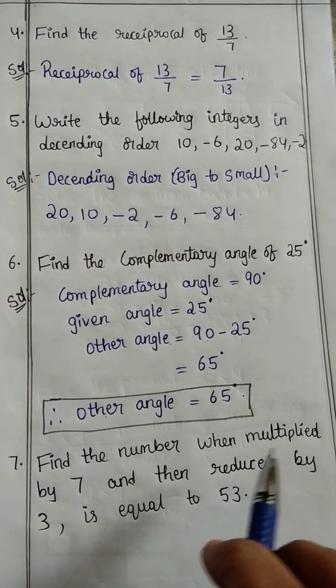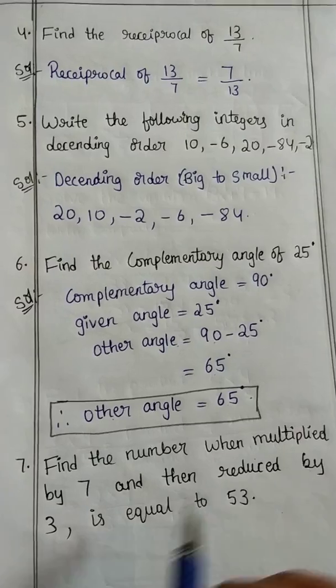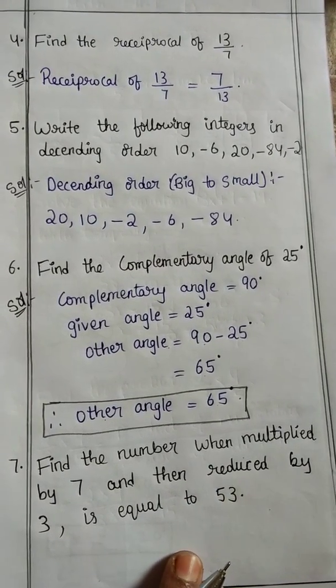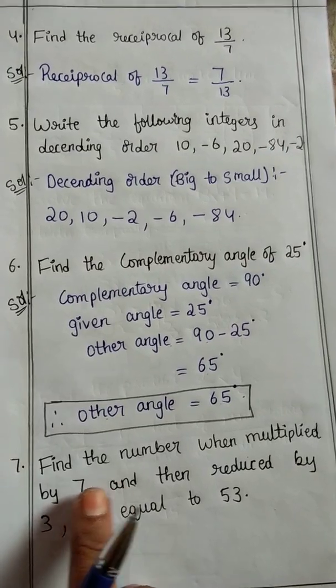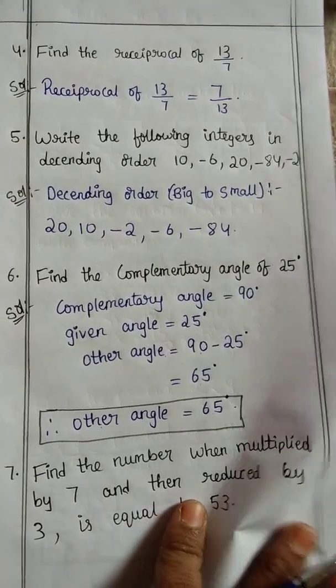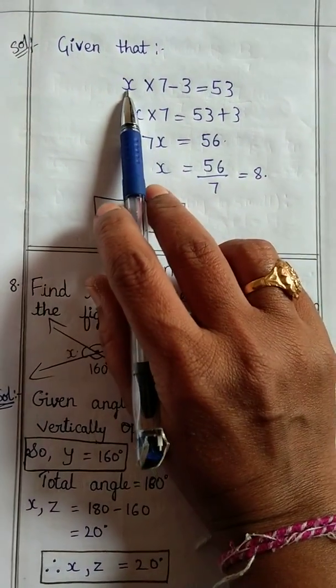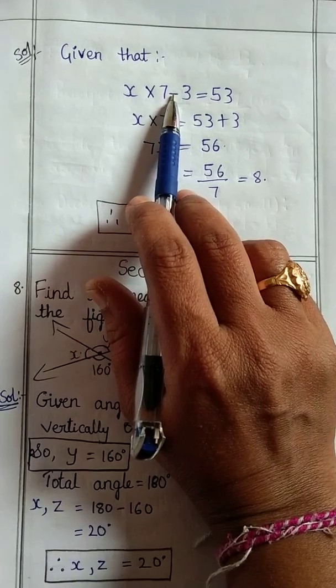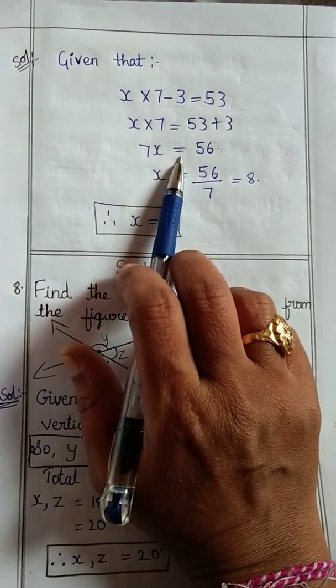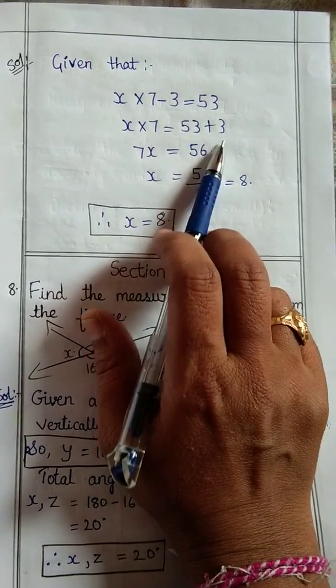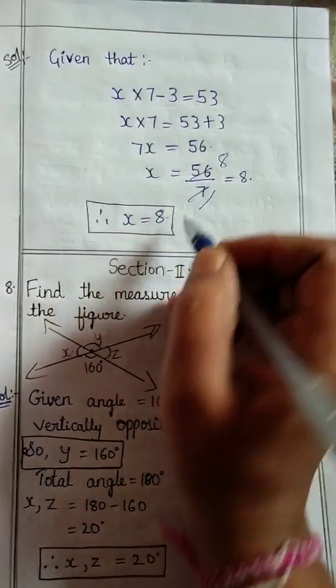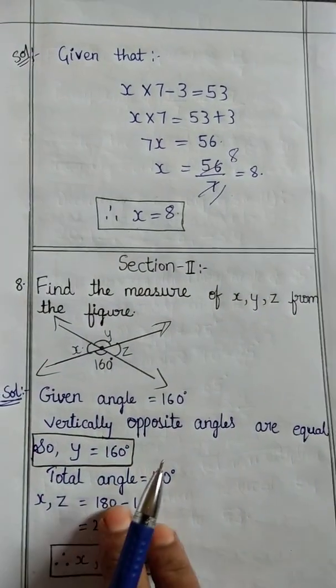Seventh question: find the number when multiplied by 7 and then reduced by 3 is equal to 53. Let us take one number x, then multiplied by 7 means 7x, reduced by 3 means minus 3, is equal to 53. Let the number x, multiplied by 7, reduced means minus, minus 3 and is equal to 53. So 7x equals 53, transpose of minus becomes plus, so 53 plus 3 is 56. x is equal to 56 by 7. 7 eights are 56, so x is equal to 8.